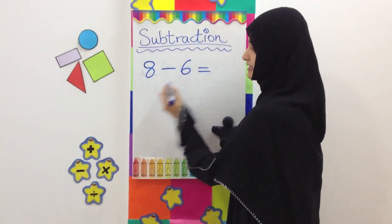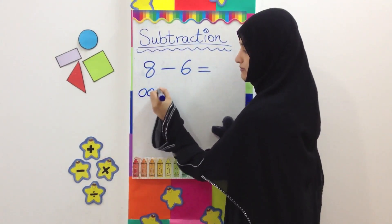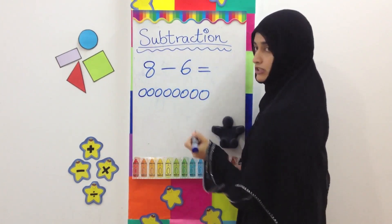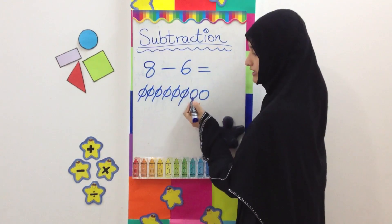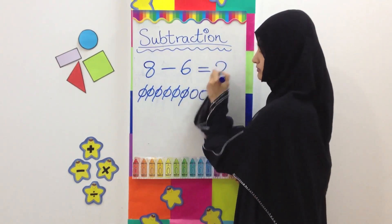8 minus 6. We are going to make 8 balls: 5, 6, 7, 8. Cross out 6: 1, 2, 3, 4, 5, 6. We are left with 2: 1, 2.